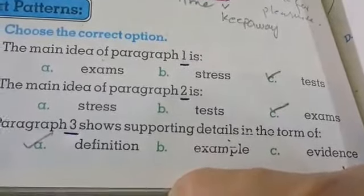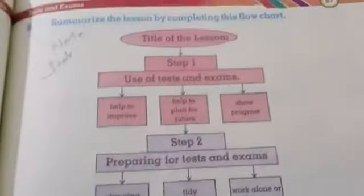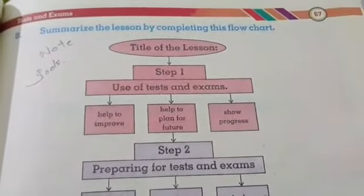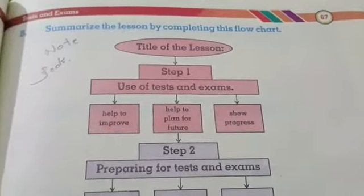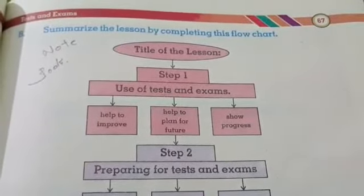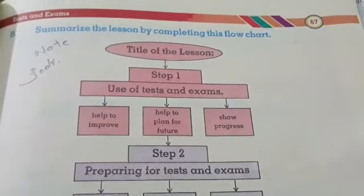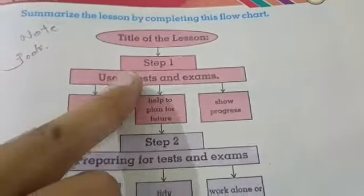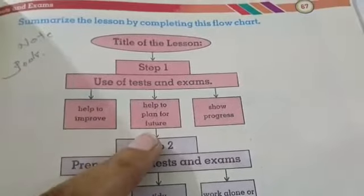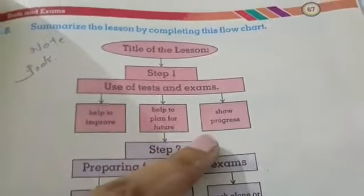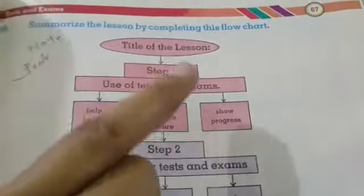They have given the definitions — spotting details. So you have to take them in your workbook and learn them as well. You have to write the summary on the rough notebook, and you have to summarize the lesson by completing the following chart. First of all, title of the lesson — step one. In step one, uses of tests and exams: help to improve, help to plan further, show progress.